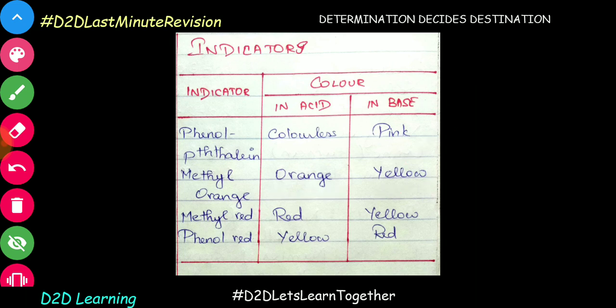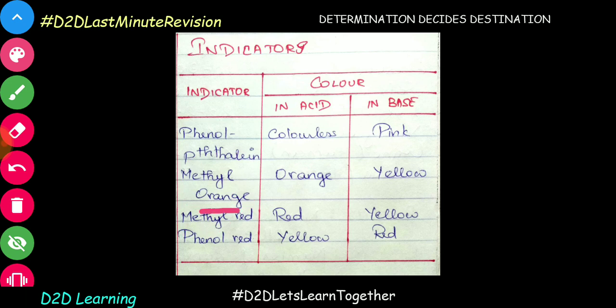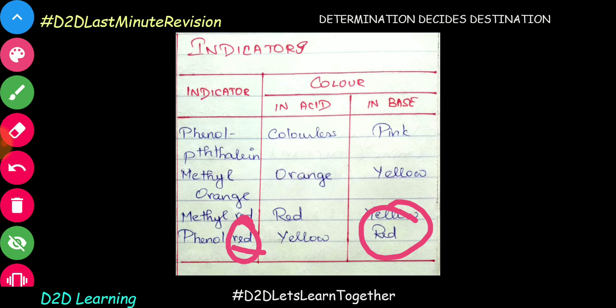Why are you confused? This is simple — very easy. Think about methyl: methyl is closely related with acid. Methyl Orange and Methyl Red — the acid color carries the indicator's own name color (orange or red). For base, both methyl indicators turn yellow. Phenolphthalein and Phenol Red — both phenol-based indicators show their strong color in base. Phenolphthalein is colorless in acid.